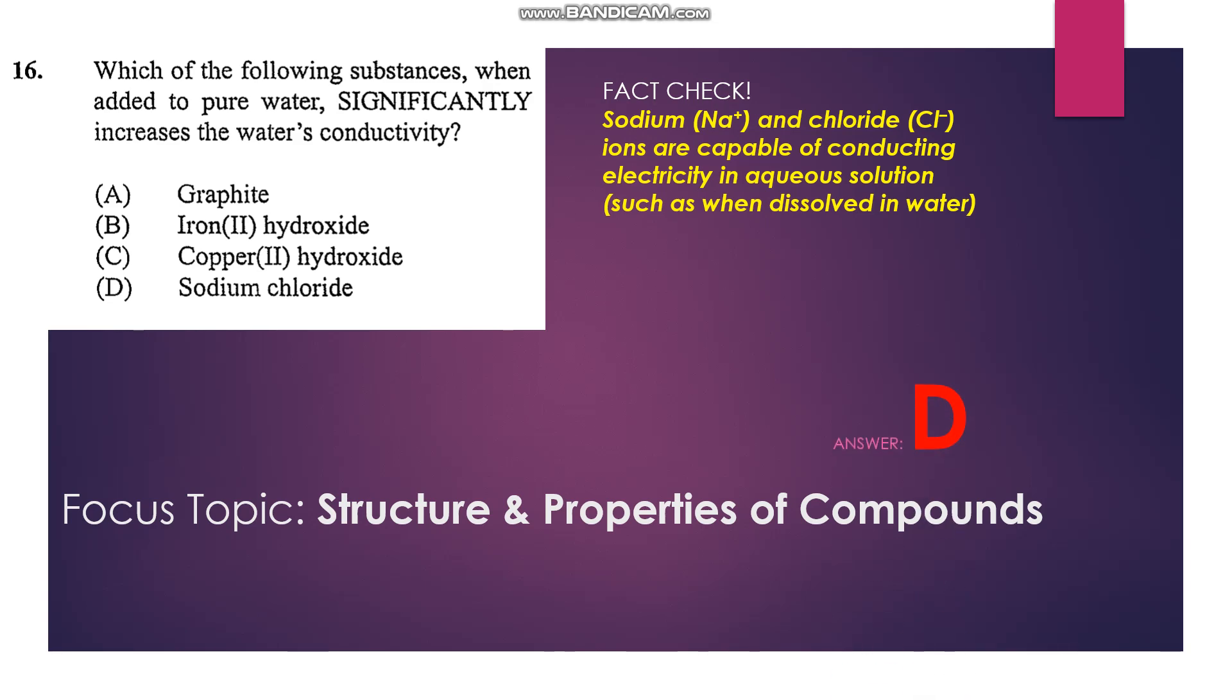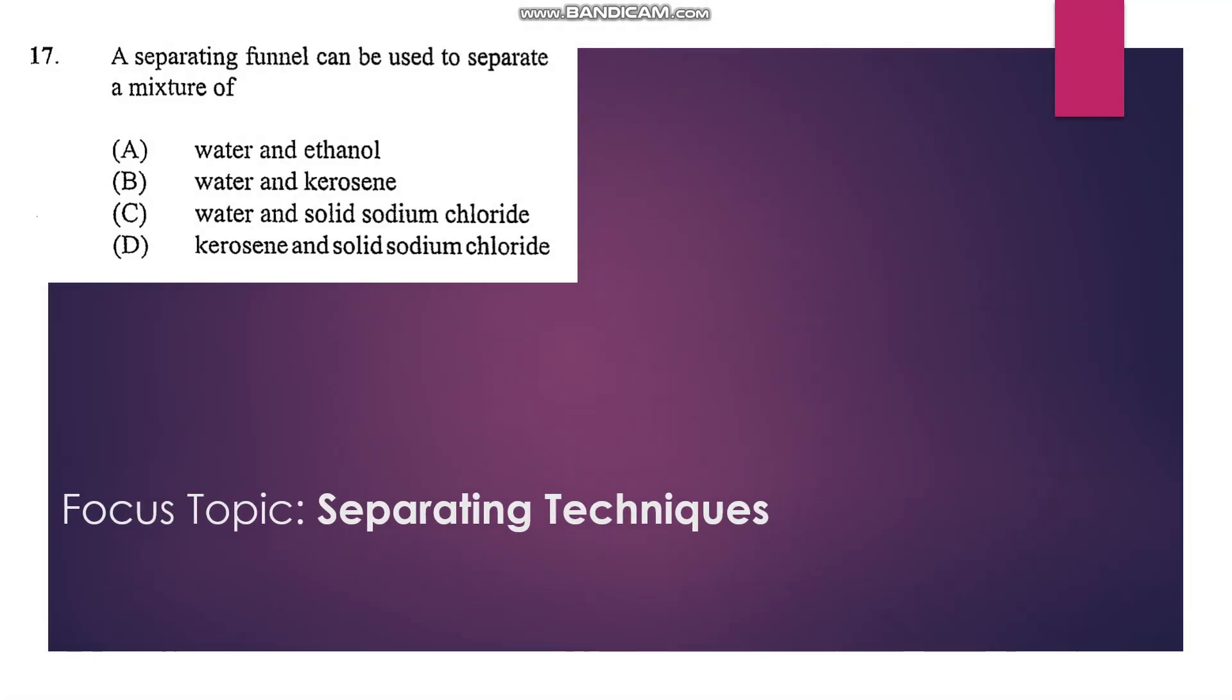Number 17: A separating funnel can be used to separate a mixture of... Know that the separating funnel is used to separate mixtures of immiscible liquids into phases of different densities, so we're looking for two immiscible liquids and that would be water and kerosene. So that's B.